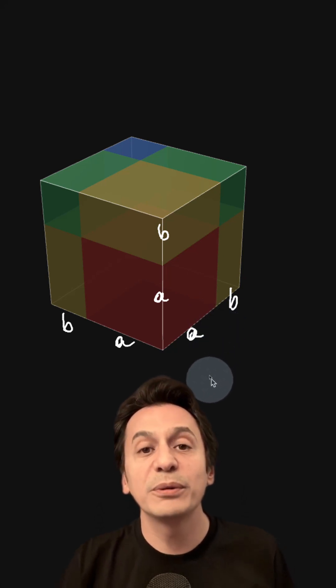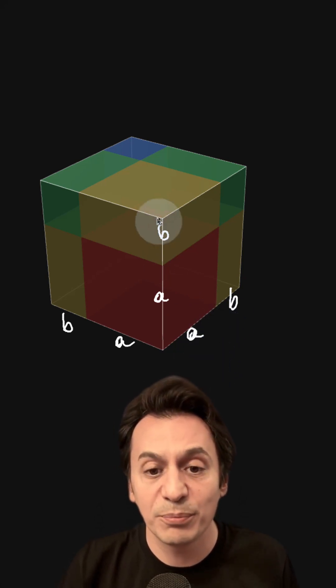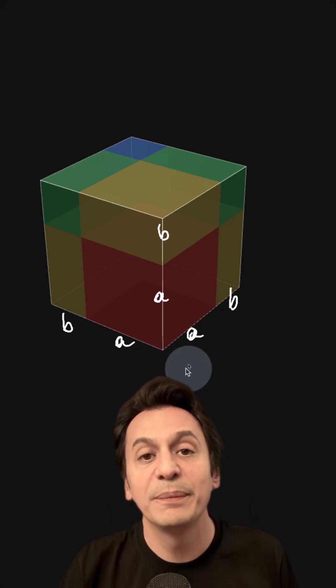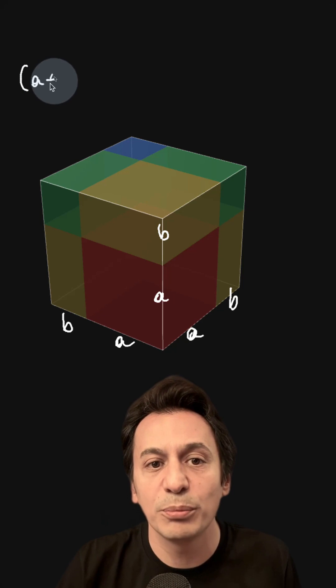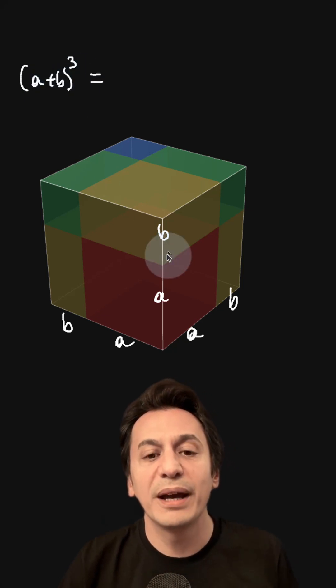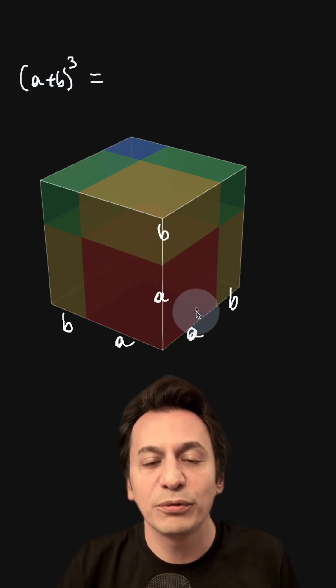Now if I want to find the volume of this cube, I multiply the edges together. That means (A+B) to the power of 3, or in other words, the cube of A plus B, which gives the volume of the cube.